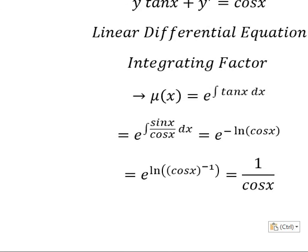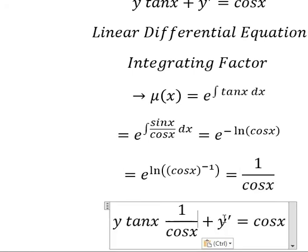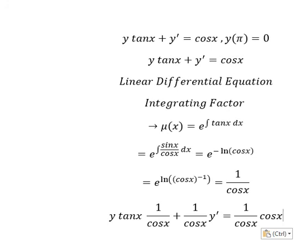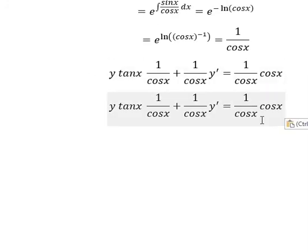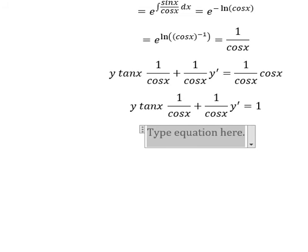That means we multiply both sides by one over cosine(x). We simplify this side and we get one. Next, we take the integration of both sides.